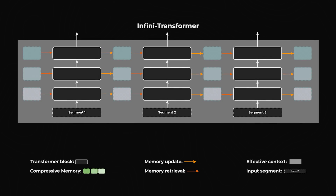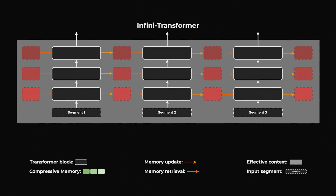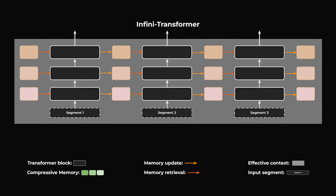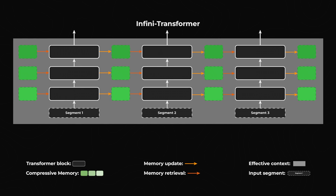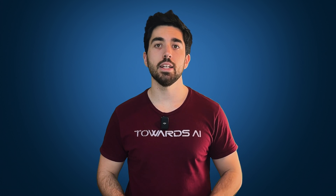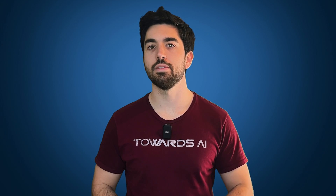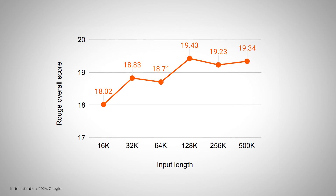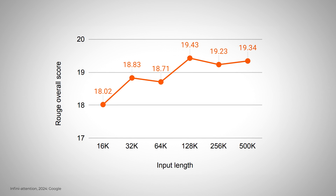This ensures that even distant but relevant details are considered in every new step. After processing each segment, the model updates its memory states, incorporating new data and selectively discarding less pertinent information. This keeps the memory efficient and manageable, optimizing both performance and resource utilization. By managing memory in this way, Infini-Attention achieves a balance between depth of context and computational efficiency, which is crucial for tasks involving large volumes of text or where historical context significantly influences current decisions. They have shown that using the Infini-Attention mechanism performs even better the more context we give it, instead of worsening the results.